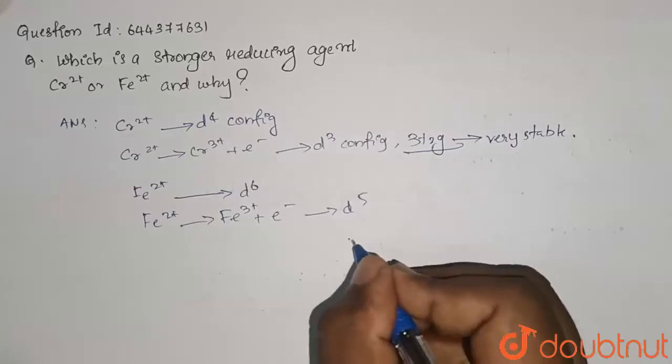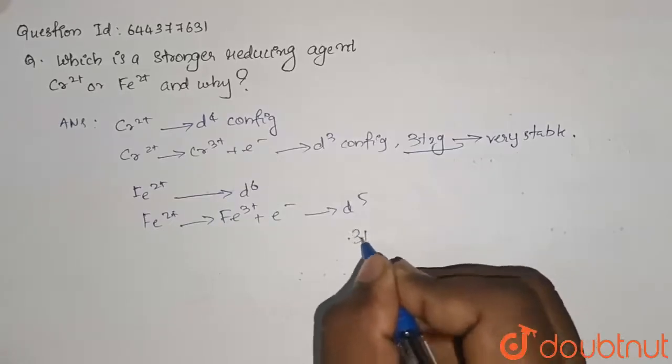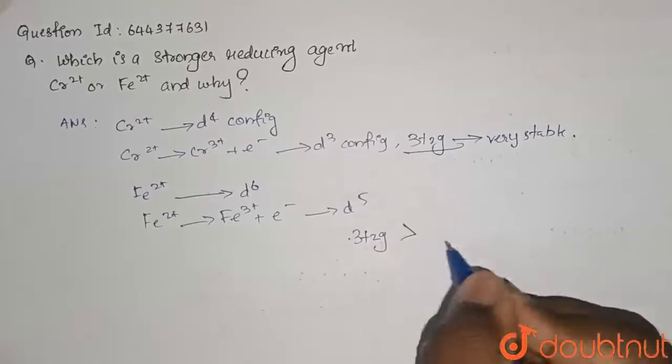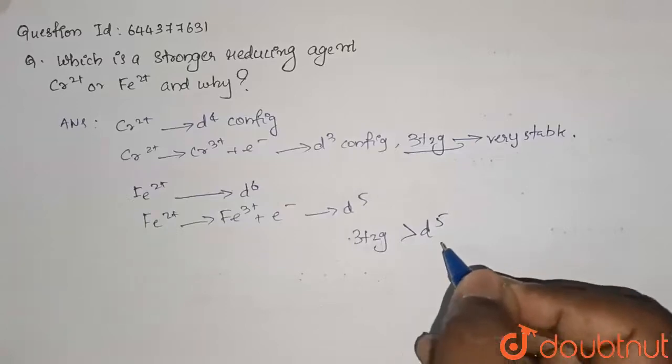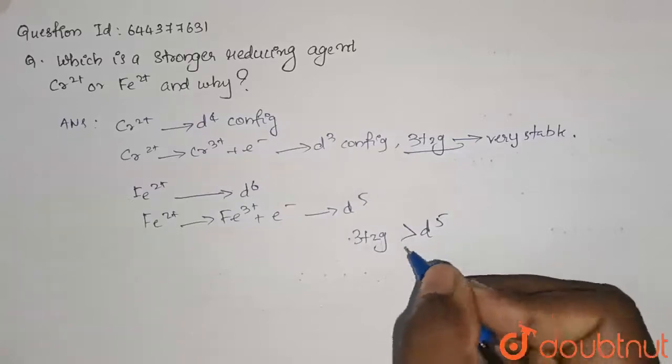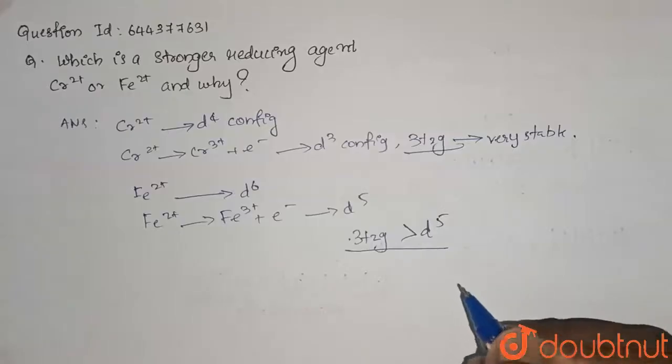So the stability that Cr2+ gets in 3T2g or you can say d3 is greater than the stability Fe2+ gets when it becomes Fe3+ in d5 configuration. So this is the reason. So Cr2+ is a stronger reducing agent compared to Fe2+. I hope you got it. Thank you.